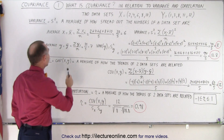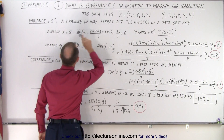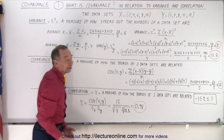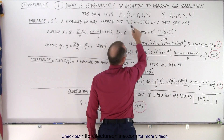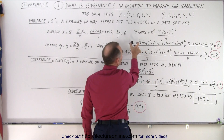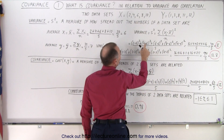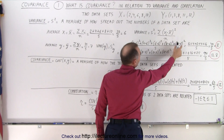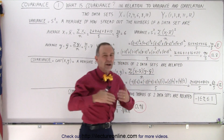To calculate the variance, first we find the average of the data set — we add up all the numbers and divide by how many we have. For the X data set, the average is 6. Then we take each number, find the difference from the average, and square that result: 2 minus 6 squared is 16, 4 minus 6 squared is 4, 6 minus 6 squared is 0, 8 minus 6 squared is 4, and 10 minus 6 squared is 16. Adding them all together gives 40, divided by 5 gives a variance of 8.